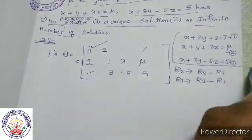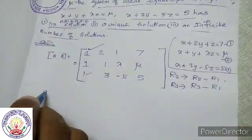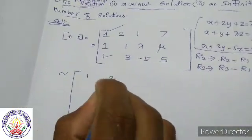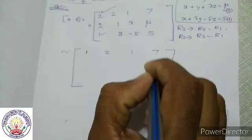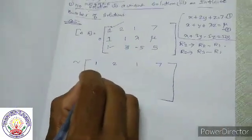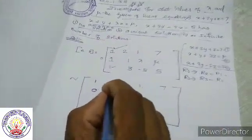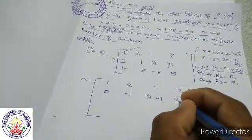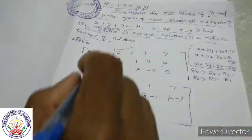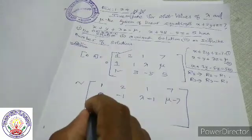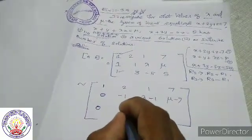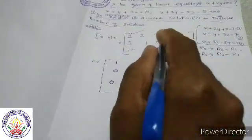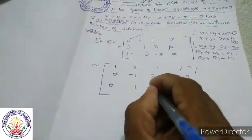Applying R2 gives R2 minus R1: first row does not change — 1, 2, 1, 7. R2 minus R1: 1 minus 1 is 0; 1 minus 2 is minus 1; lambda minus 1; mu minus 7. R3 minus R1: 1 minus 1 is 0; 3 minus 2 is 1; minus 5 minus 1 is minus 6; 5 minus 7 is minus 2.